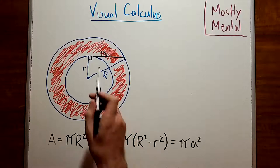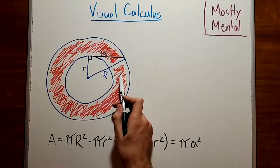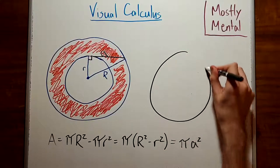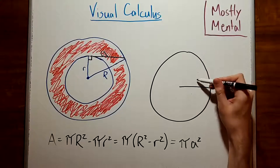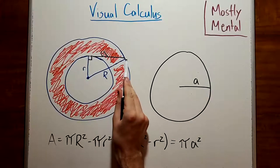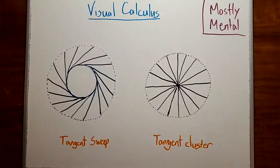Which means that the area of this annulus here is going to be the same as the area of a circle, whose radius is the same as the length of this tangent segment. Okay, that makes sense algebraically, but I promised you something more visual. What's really going on here?